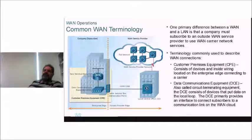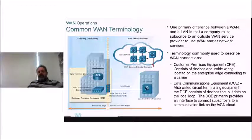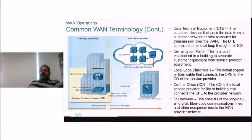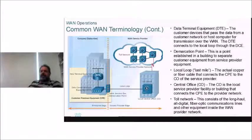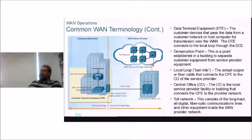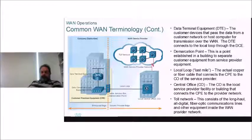DCE stands for data communications equipment. The difference between DCE and DTE: layer 3 and above devices are considered DTE — they are the source or destination of traffic — while DCE just transmits other devices' traffic. The demarcation point, or demarc, is the line between your network and their network. The local loop is the run between your site and the telephone exchange or their central office.